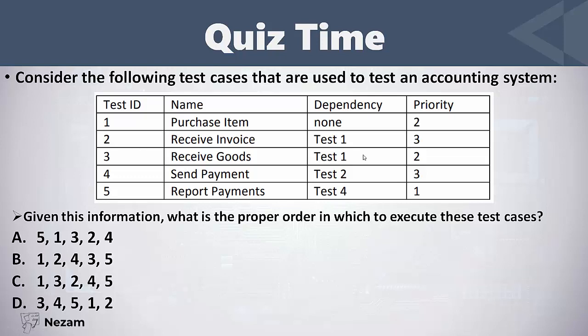Test cases two and three both depend on test case one. We choose the one with the higher priority, which is test case three with priority two, before test case two with priority three — remember, a lower priority number means higher priority. So the execution order is: test case one, then test case three, then test case two. Then test cases four and five: five depends on four, and four depends on two which we already executed, so we execute test case four then test case five.